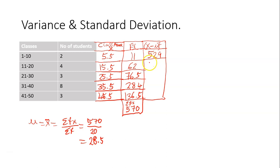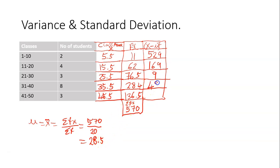Put it in bracket before you add the square so that you can get the correct answer. The next one: (15.5 minus 28.5) squared, you get 169. Then (25.5 minus 28.5) squared, you get 9. And then the last one: (45.5 minus 28.5) all squared, you get 289.